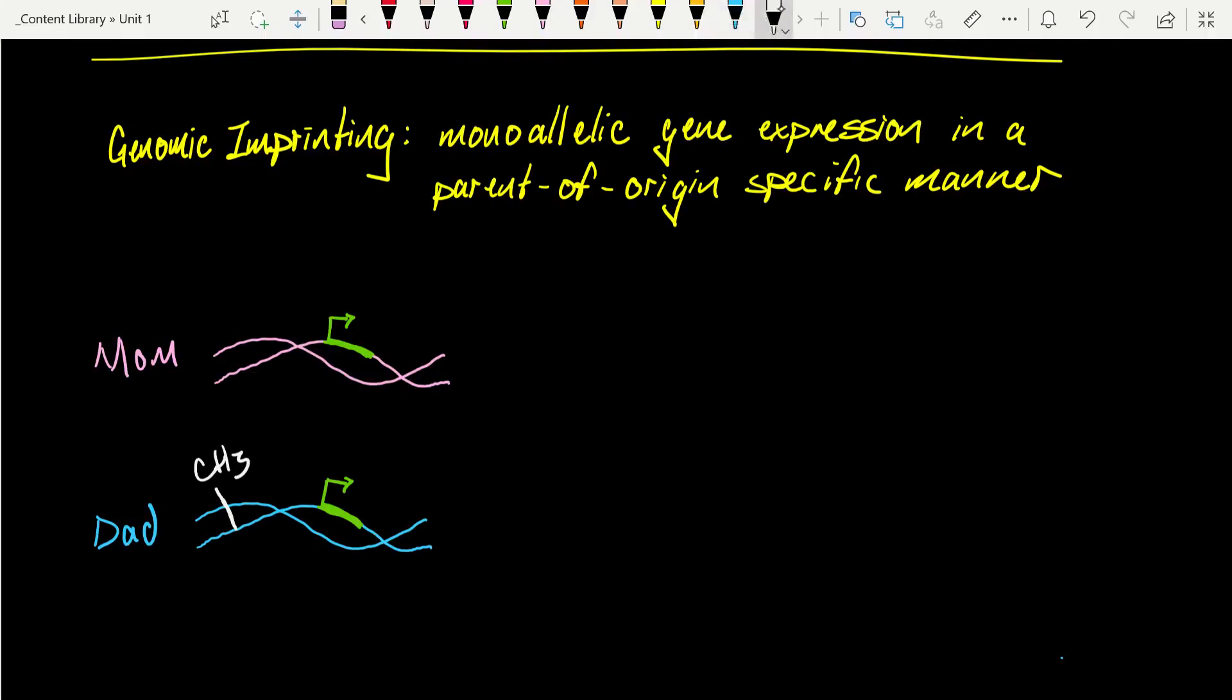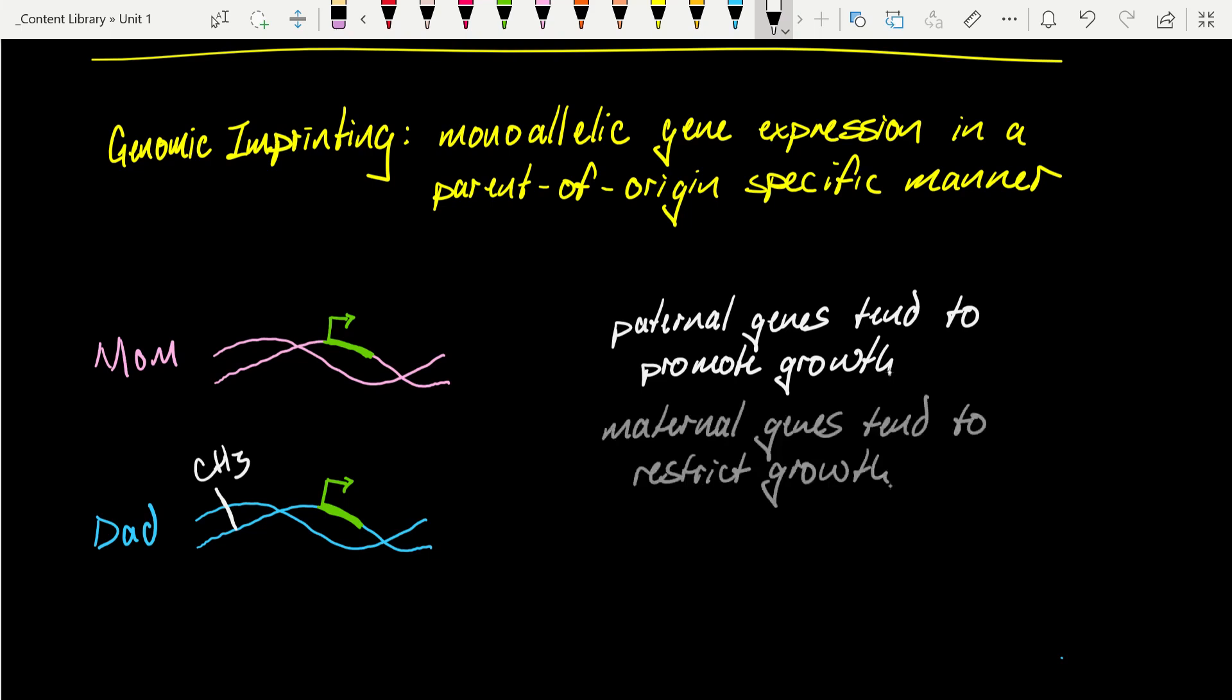But they are very important. One hypothesis is that these are competing interests. For example, paternal genes tend to promote growth, whereas maternal genes tend to restrict growth. A really good example of a genetic syndrome where this effect is on full display is something like Beckwith-Wiedemann syndrome. This is associated with the misexpression of a gene called IGF2, insulin-like growth factor 2, which is an important imprinting gene.